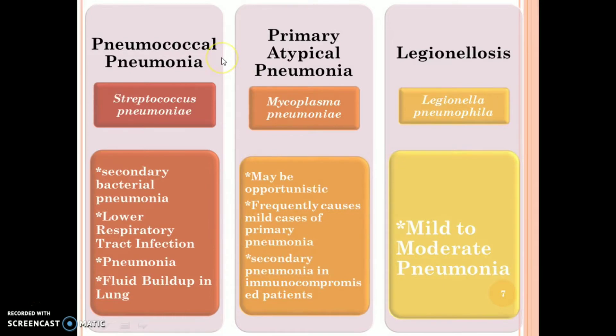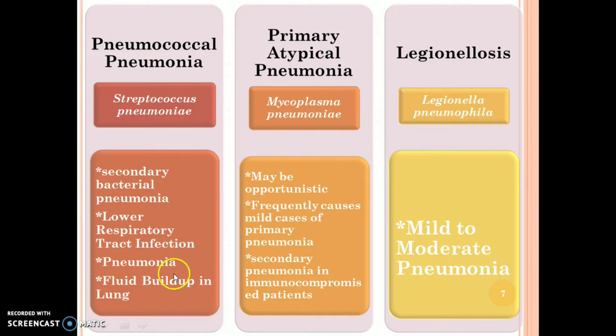Pneumococcal pneumonia is caused by Streptococcus pneumoniae. The symptoms are secondary bacterial pneumonia, lower respiratory tract infection, pneumonia, and fluid buildup in the lung.